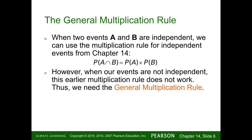When two events A and B are independent, we can use the multiplication rule for independent events from Chapter 14. The probability of A and B is equal to the probability of A times the probability of B. We're going to use lots of formulas — I suggest you write them all down on a note card or separate sheet so you can reference them while doing homework.